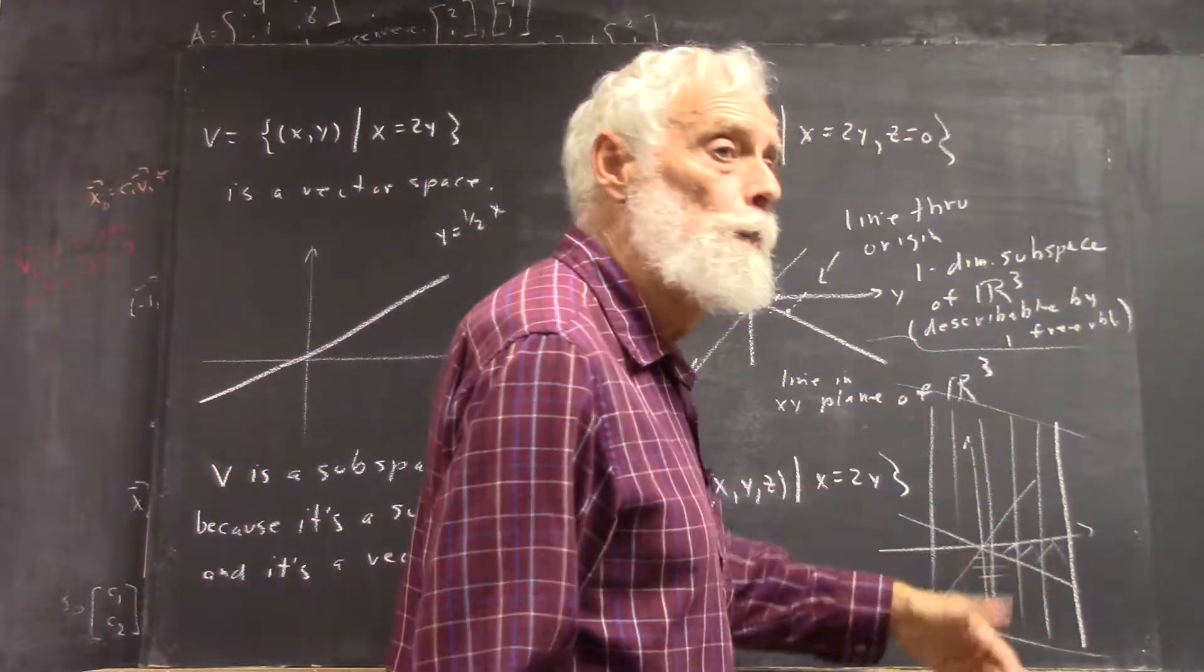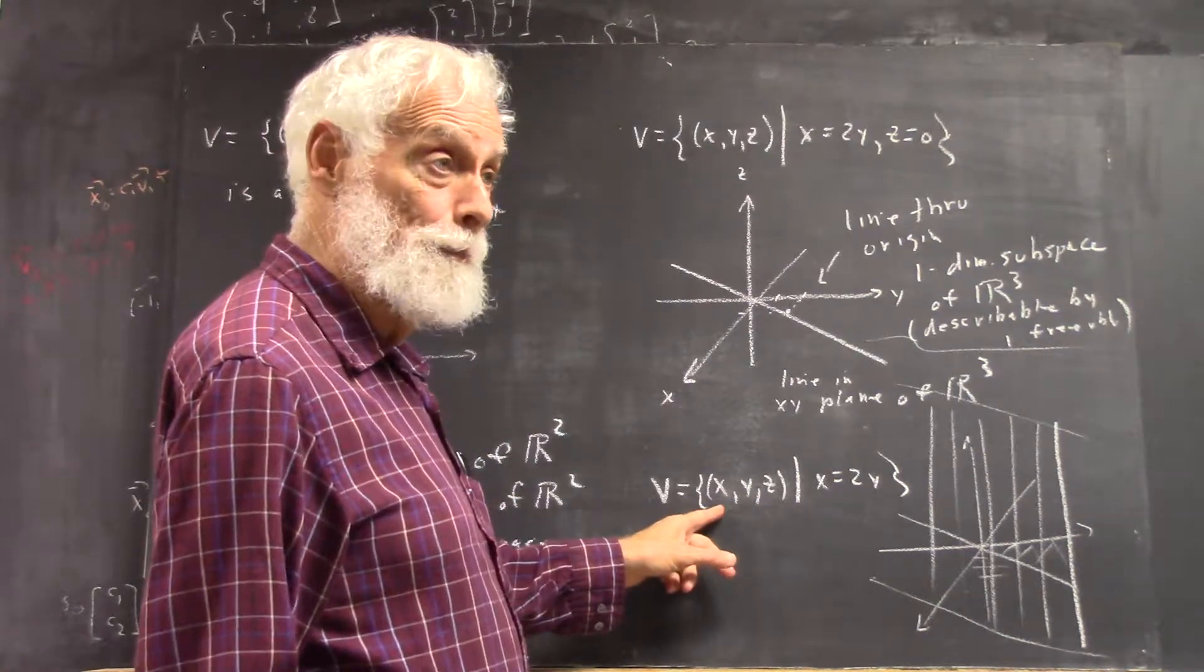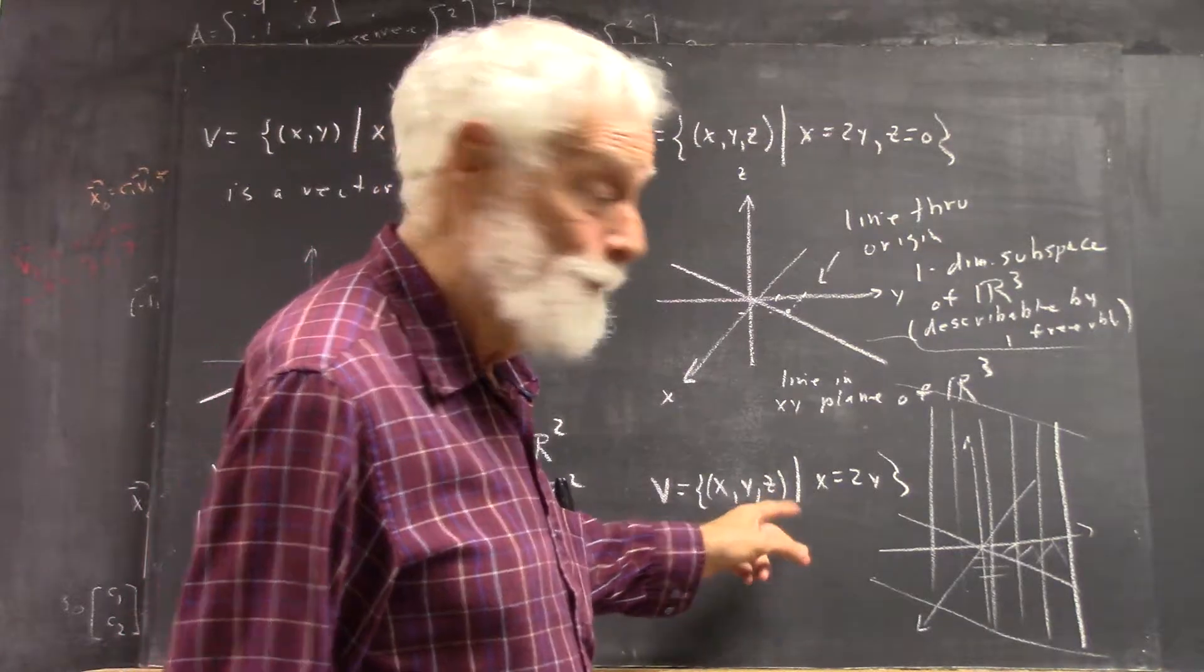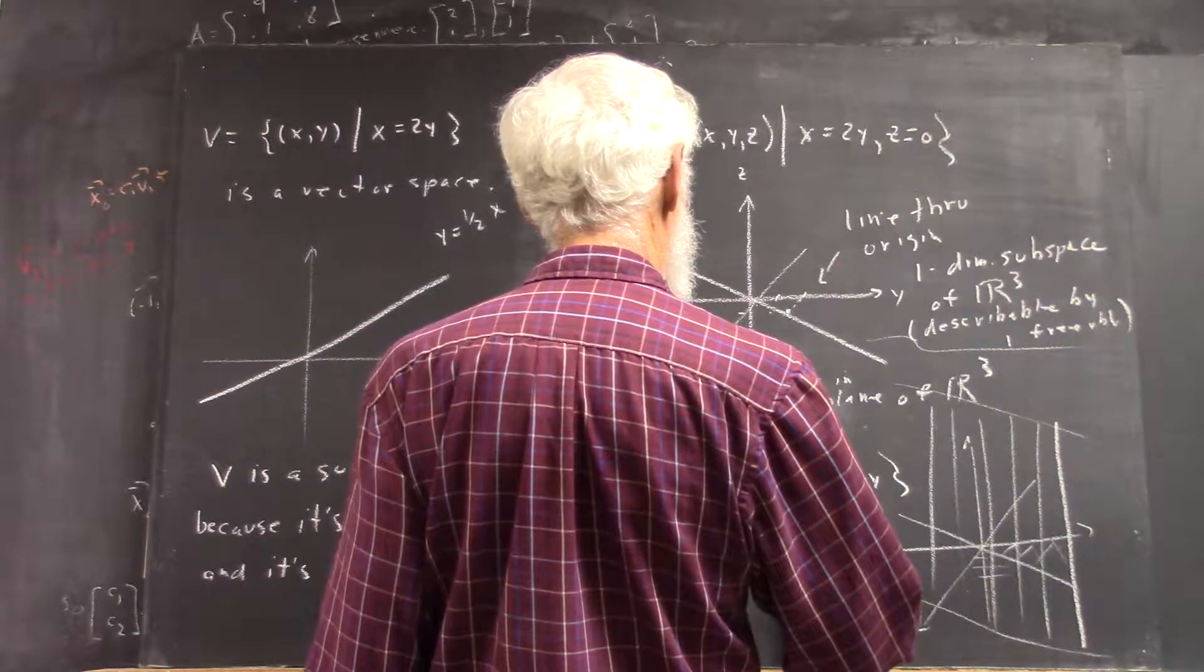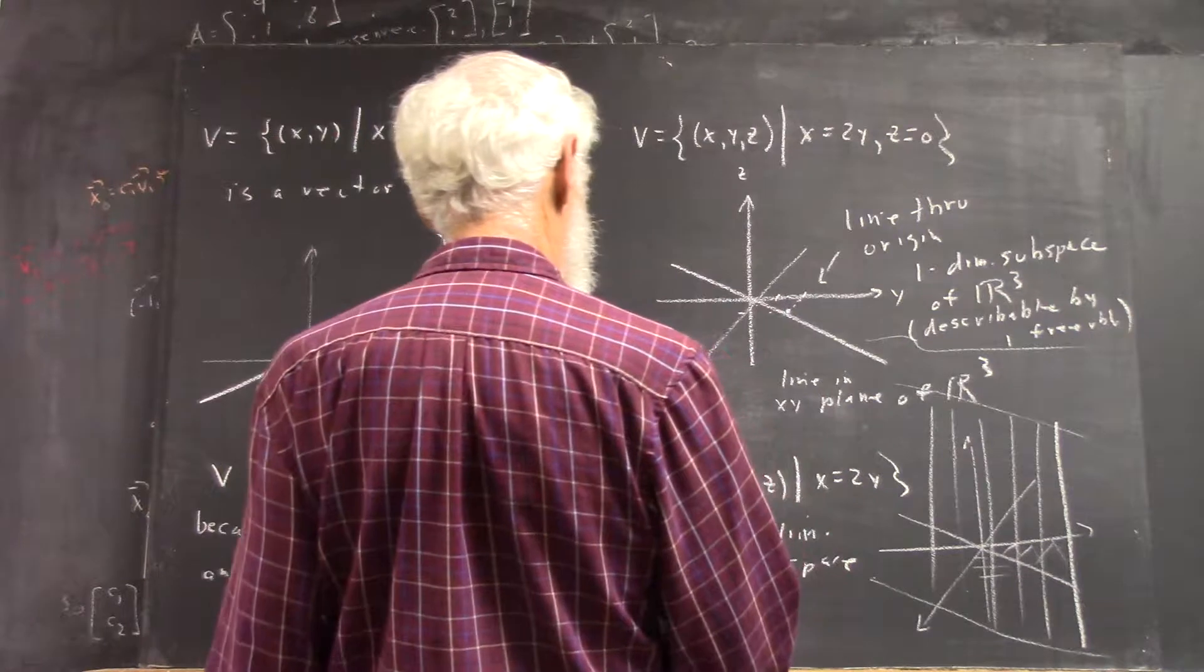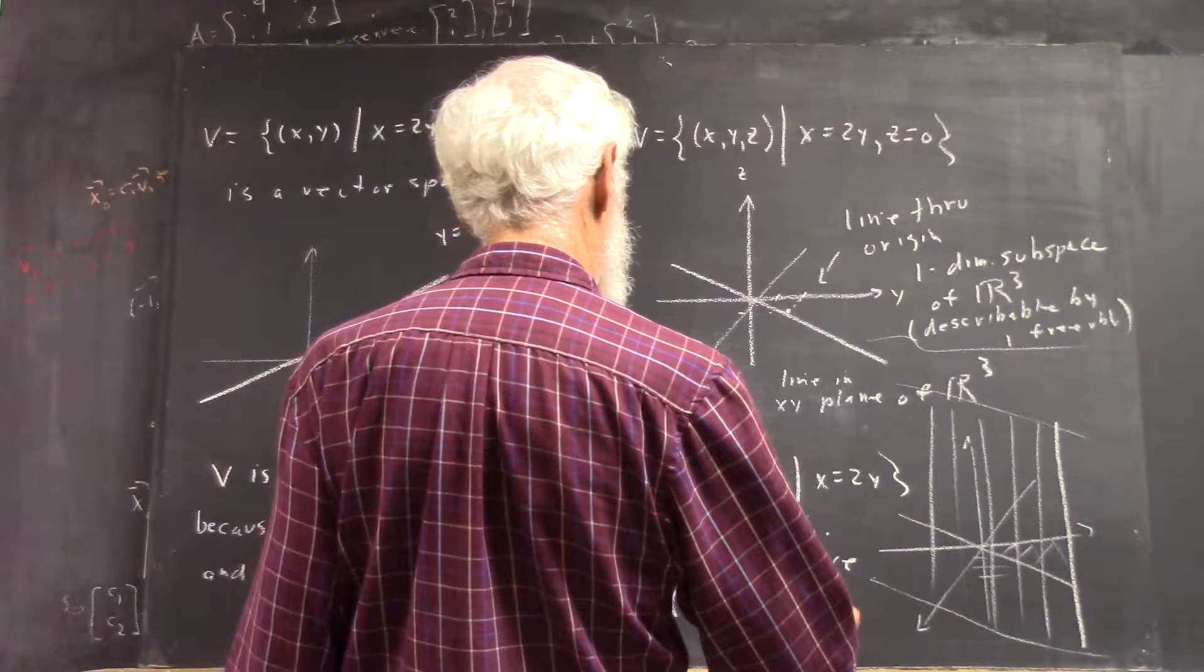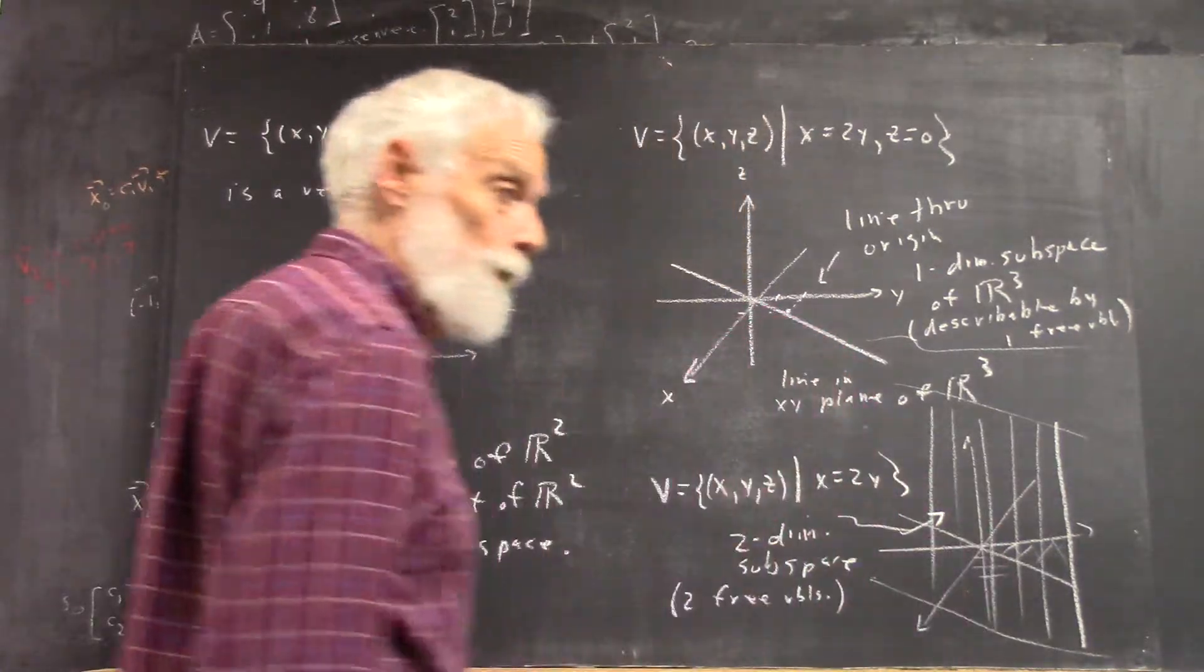Down here, I need two parameters. I could use T and 2T, but then I have to have something for Z, like maybe S. So this is a two-dimensional subspace. Two free variables or two parameters required to describe this.